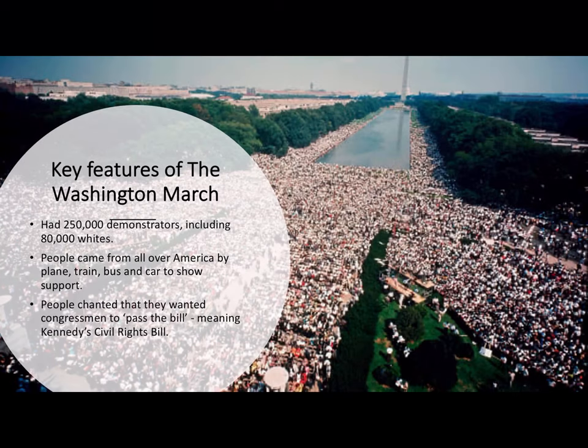So what were the key features of the March on Washington? Well, firstly, it exceeded all expectations. They ended up with about 250,000 demonstrators, of whom about 80,000 were white. They had only expected half this amount of people. People came from all over America by plane, train, bus and car, so that they could show their support for the cause by taking part in the march.